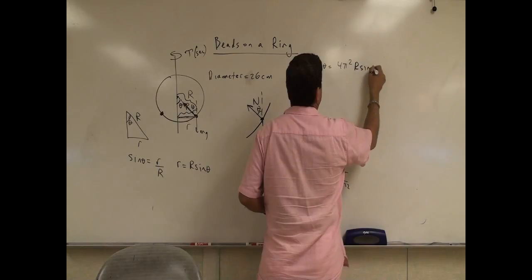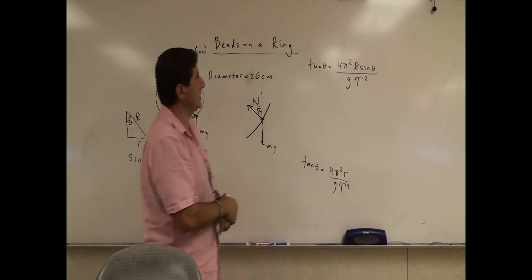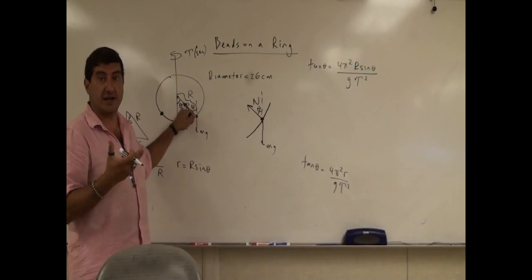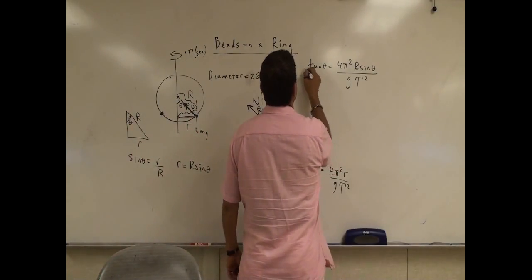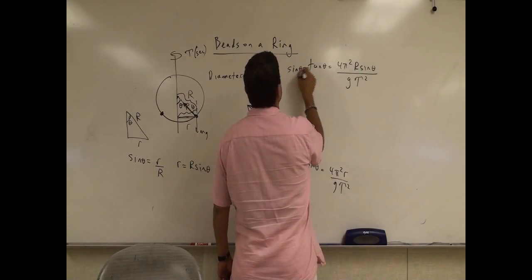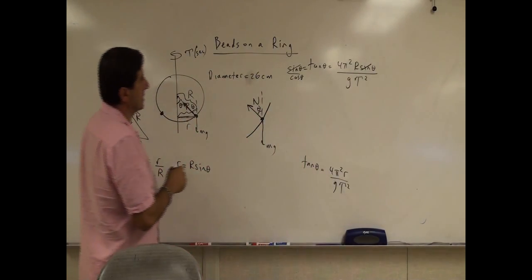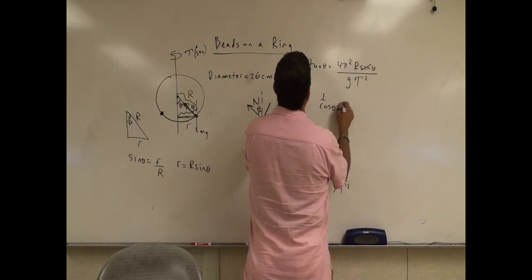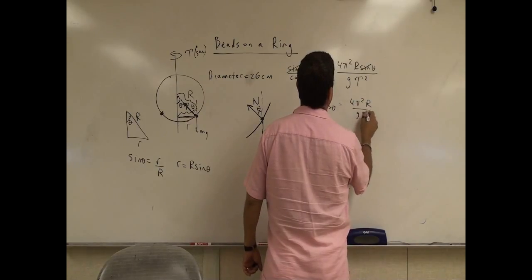Big r sine of theta over g times the period squared. What is my goal? My goal is to come up for an equation for the theta, the theoretical theta where the bead will rest. So we can say here this is sine over cosine. Sine of theta over cosine theta. And then the sine theta, sine theta cancels.